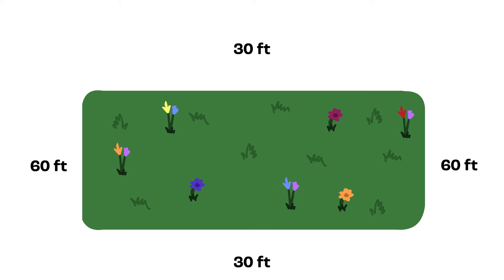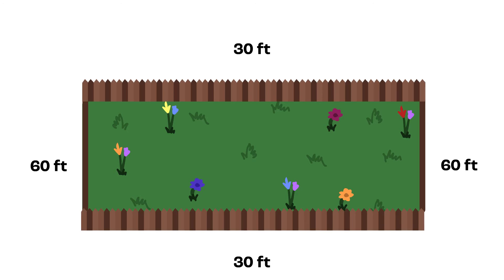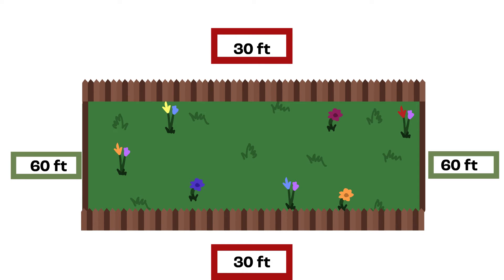Imagine that you are on a field and this field is shaped like a rectangle. There is a fence going all around the rectangle and it closes in the space. The length of two of the sides of the field is 30 feet. The length of the other two sides is 60 feet. So, what is the perimeter of the field?